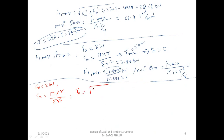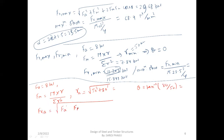For the specific rivet, r equals root over 50² plus t², and the angle θ equals tan⁻¹(t/50). The CG distance is 94.33 mm, the angle is 58 degrees, and FM equals 14.806 kN.